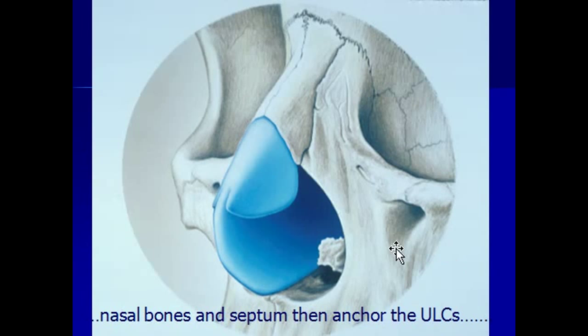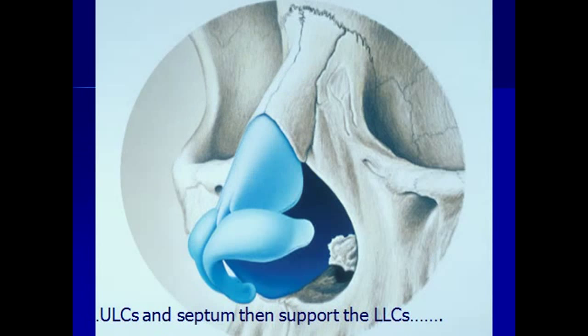Now connected to the nasal septum are the upper lateral cartilages. This forms the shape of the bridge in the middle one-third of the nose, and then below that are the lower lateral cartilages. This contributes to the shape and position of the tip of the nose.